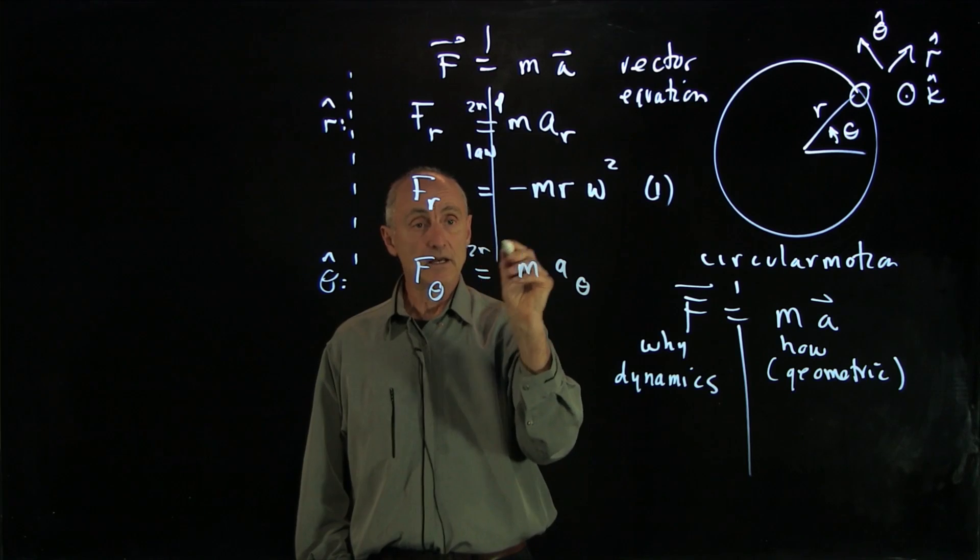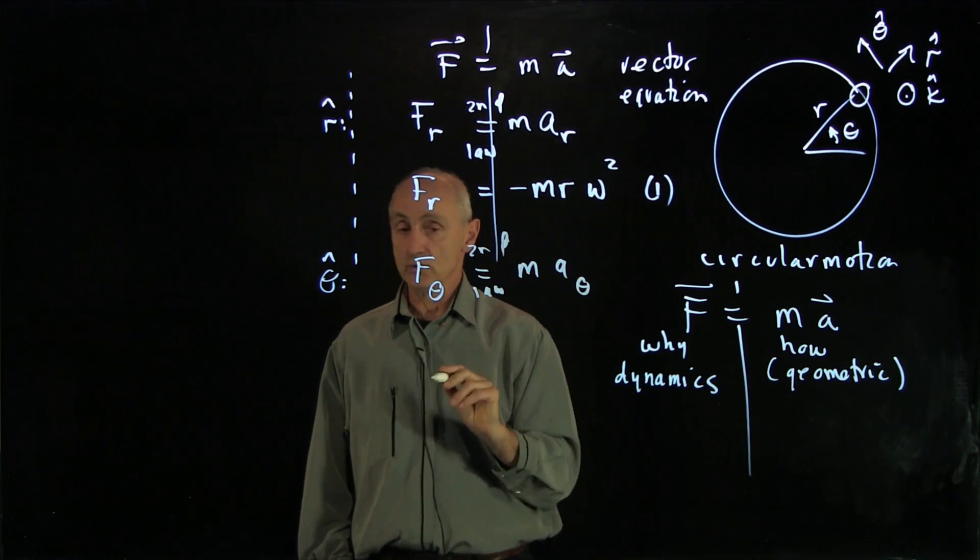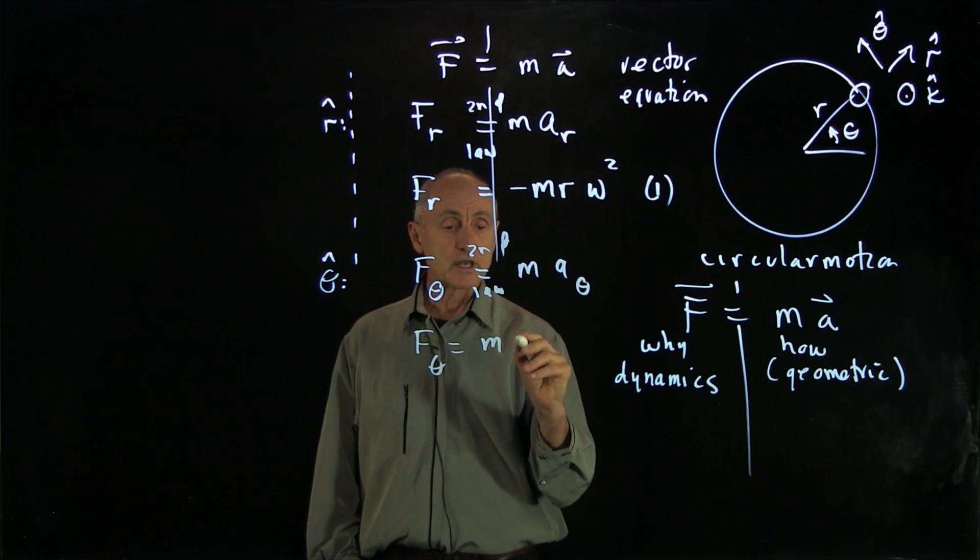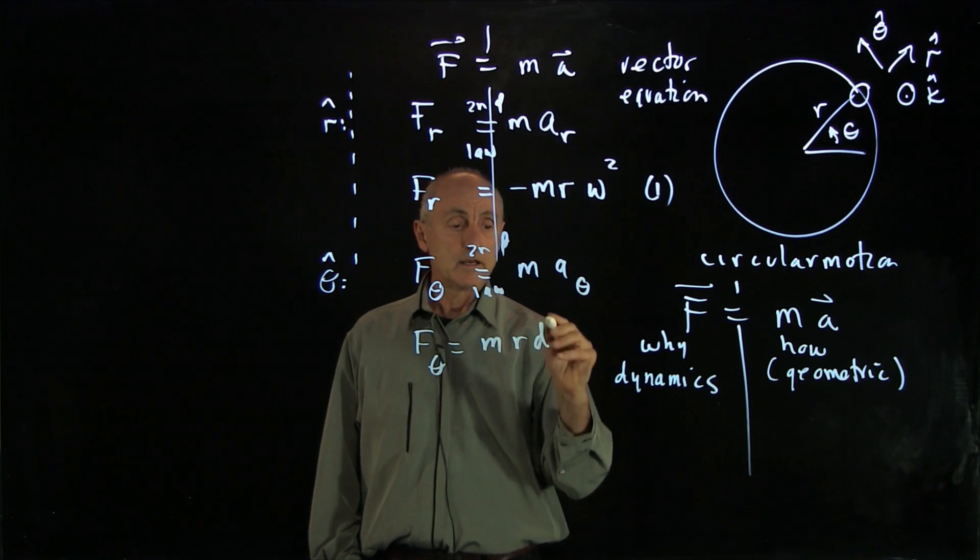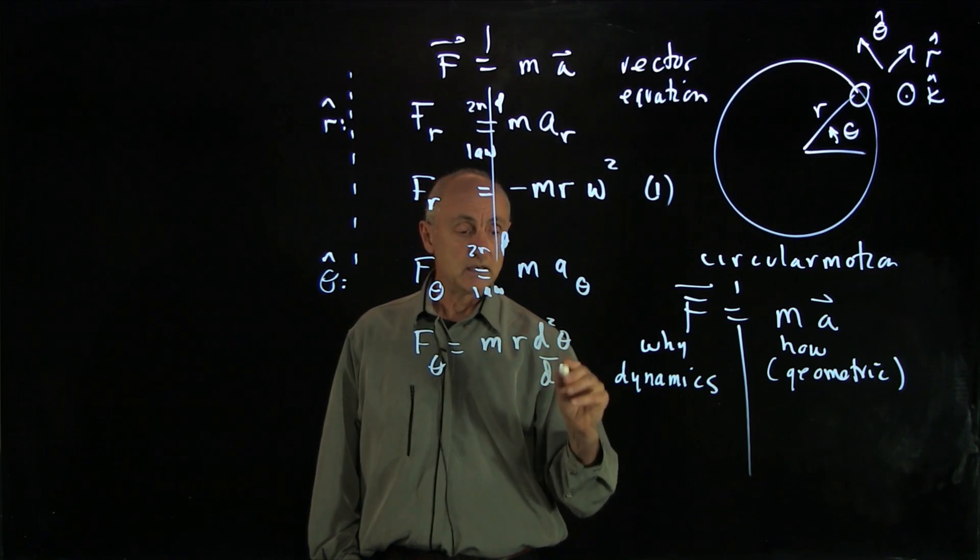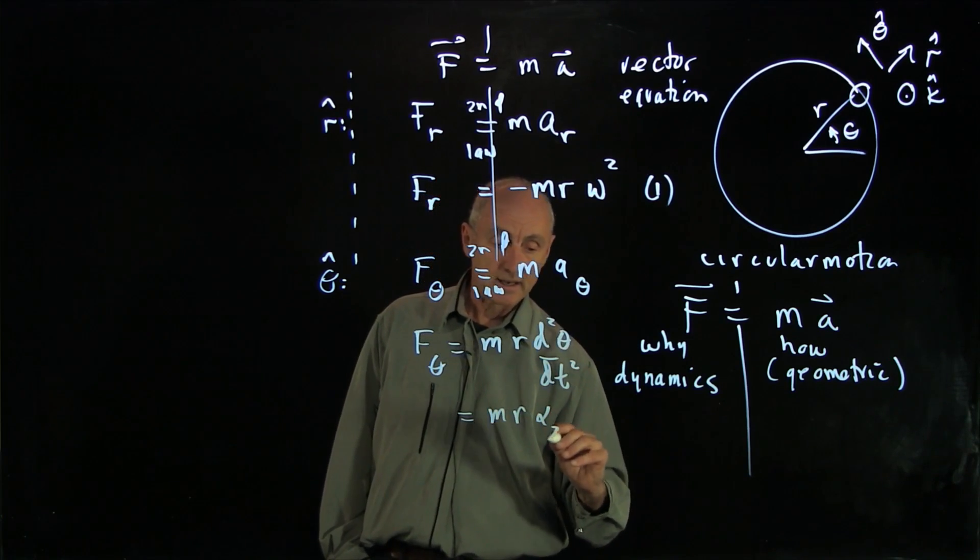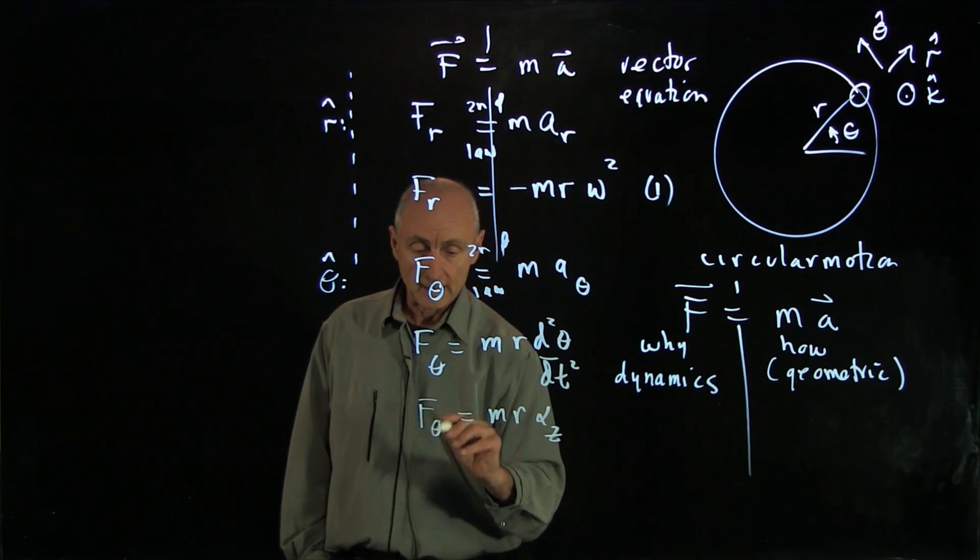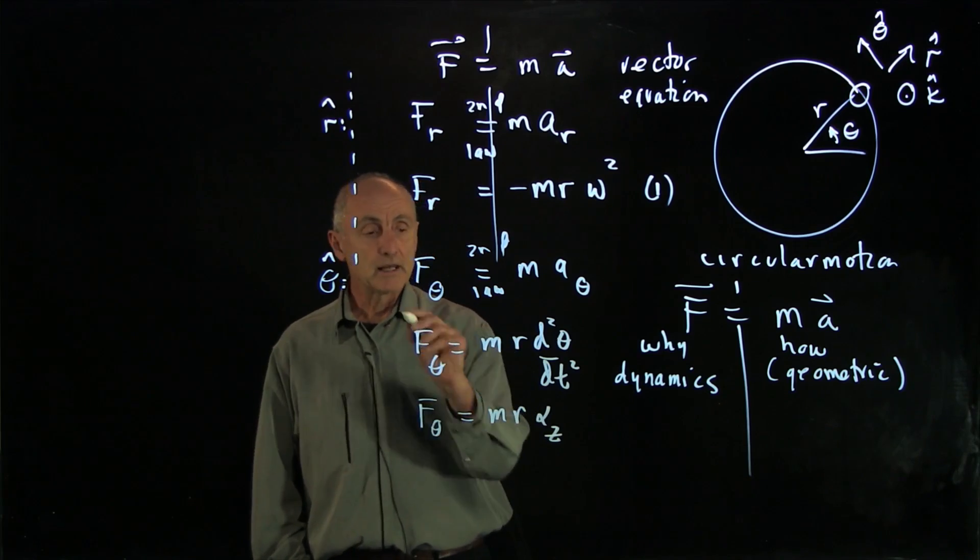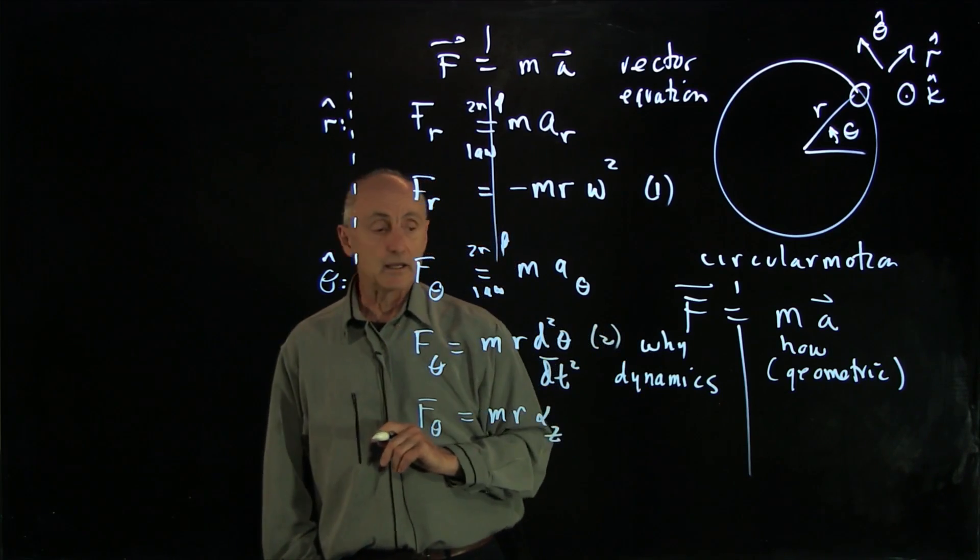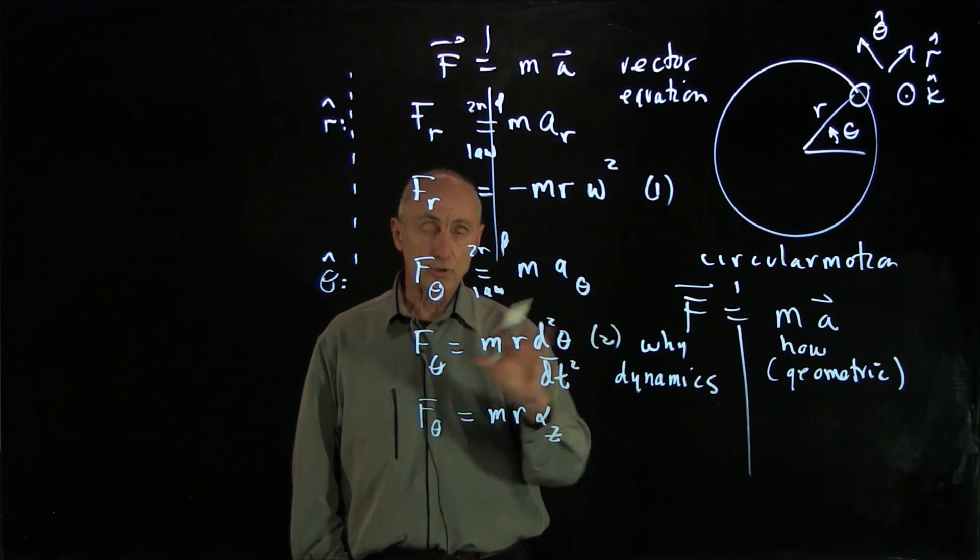And as we saw, this is again the second law equating two different things. We have that we can write the tangential force as r d squared theta dt squared. And sometimes we've been writing that as r alpha z. But this equation here is what we're going to apply for the tangential forces.